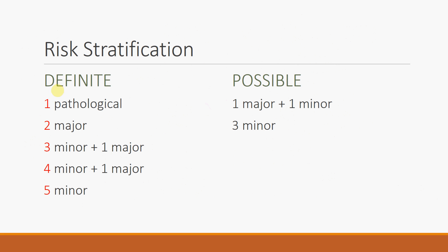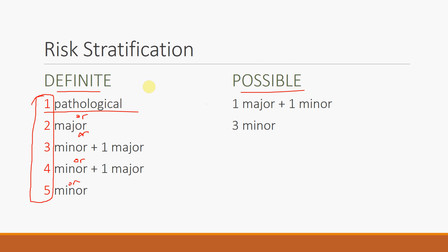For risk stratification, we care whether the patient has definitive or possible endocarditis. For definitive infective endocarditis, you need one of the following: one pathologic criterion; two major criteria; one major plus three minor; one major plus four minor; or five minor criteria alone. For possible infective endocarditis: one major and one minor, or three minor criteria.